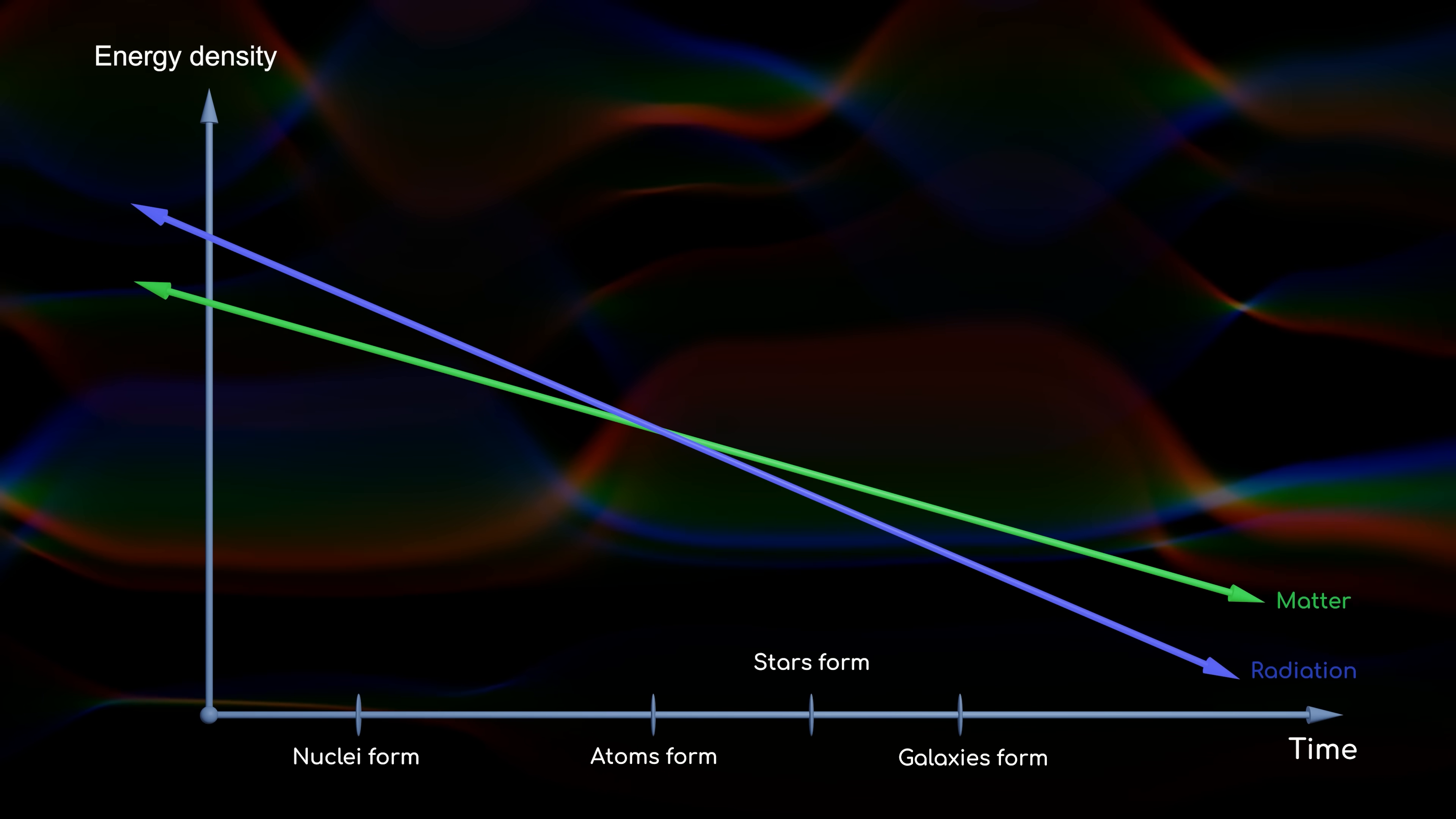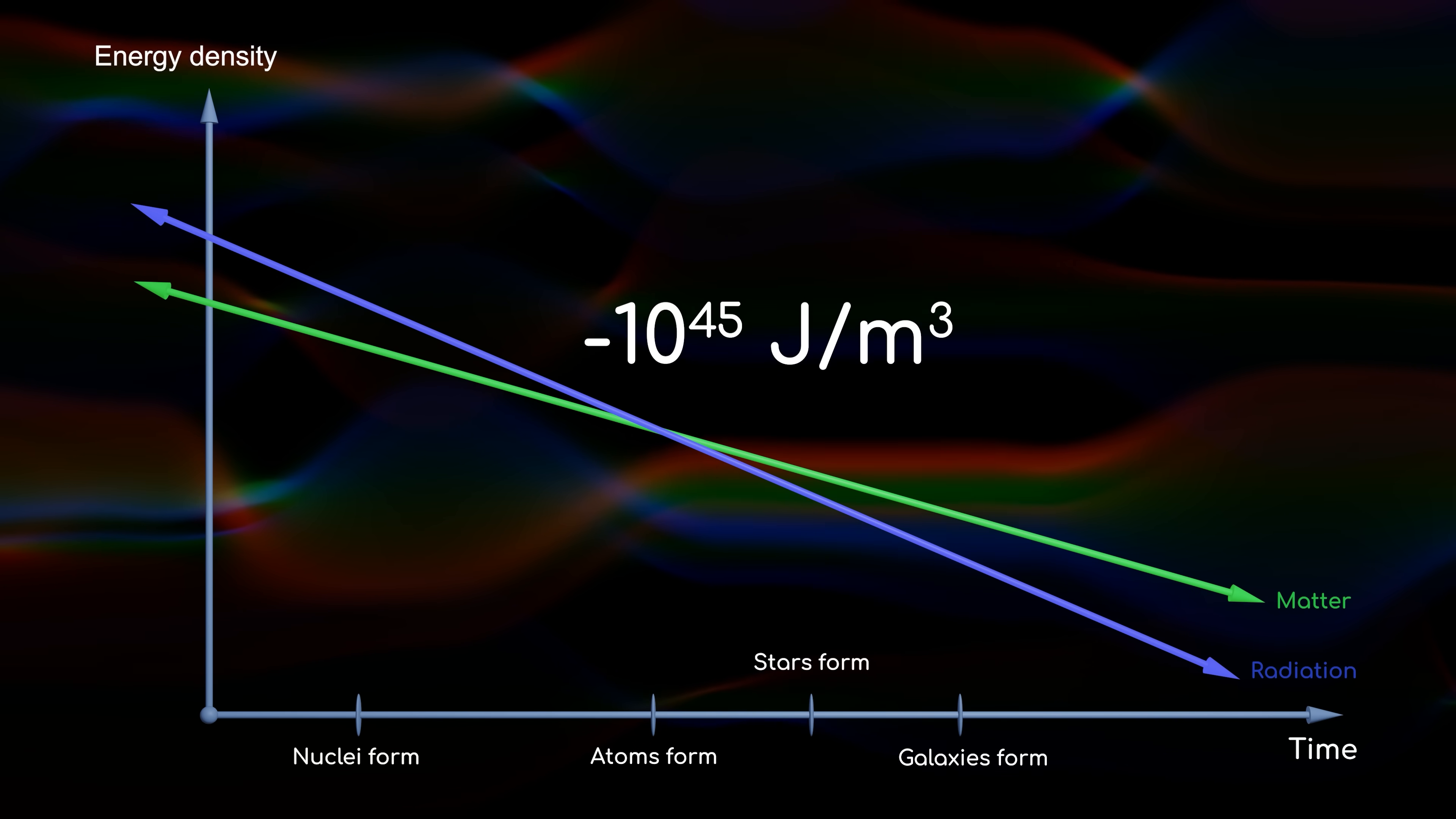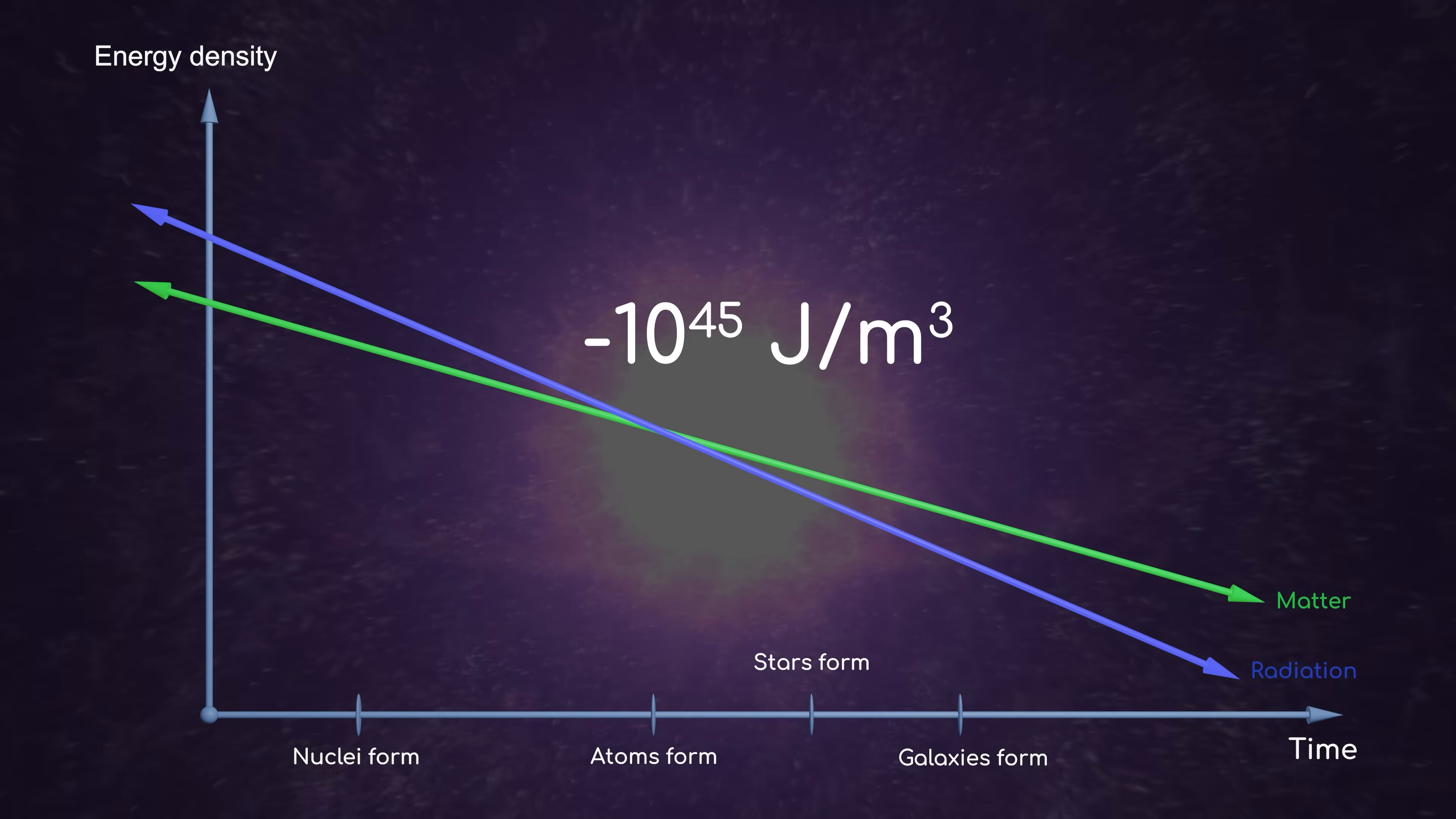And if the dark energy density were instead a negative 10 to the power 45 joules per cubic meter, the fate of the universe would be no more promising, as it would be forced to rapidly collapse in on itself in what's known as a big crunch.